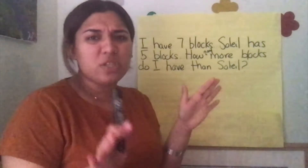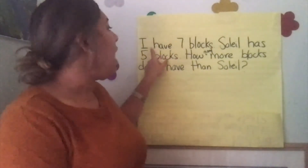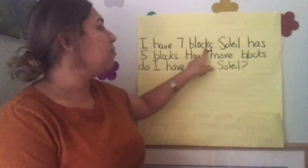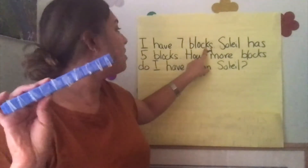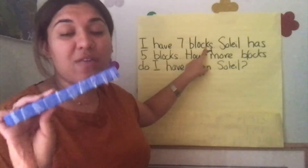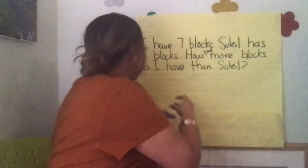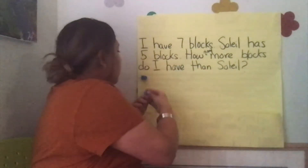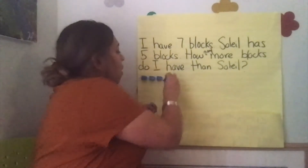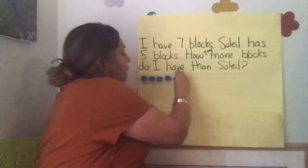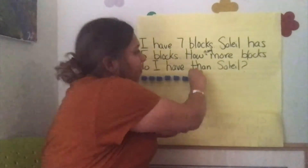Good, friends. So let's go ahead and solve this new type of story problem together. I have seven blocks — is that a number I can represent with my cubes? Yes. So how many cubes should I put down? Seven. Let's count: one, two, three, four, five, six, seven.